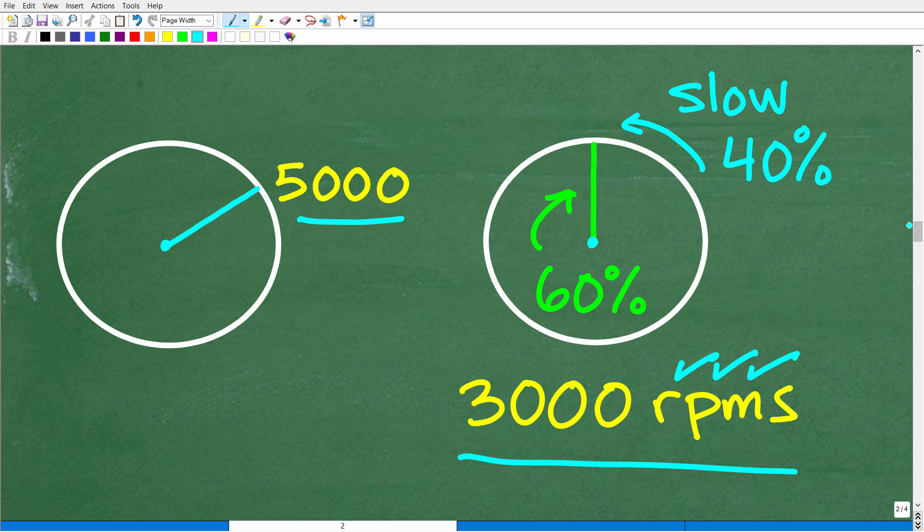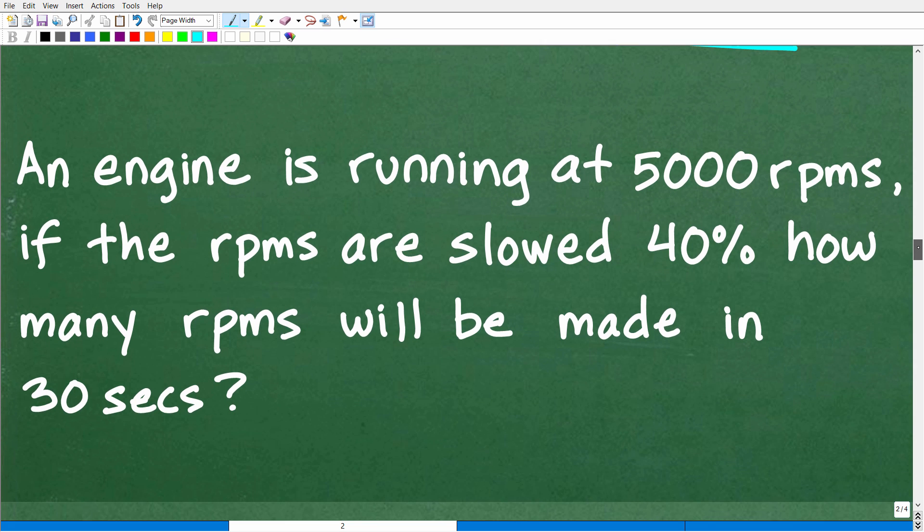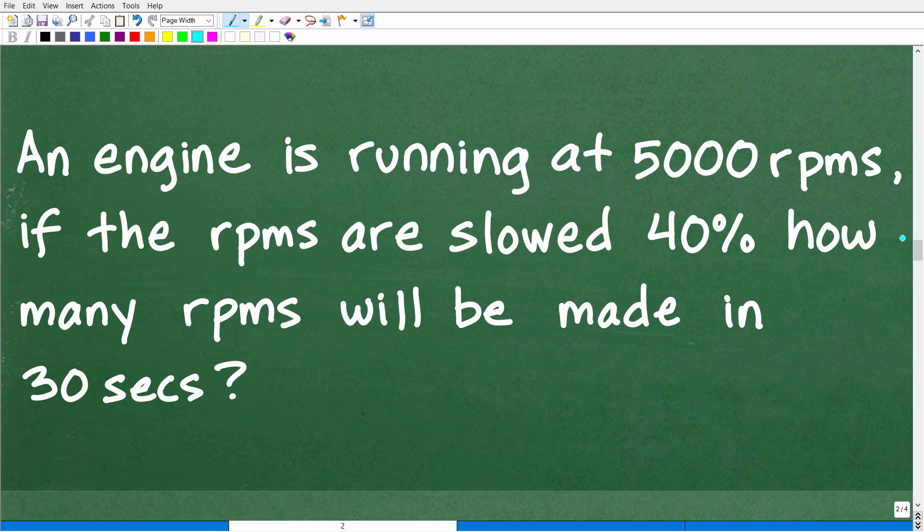Okay. So, that is really, for the most part, the information that we need to know in order to answer the question. So, let's revisit the question. An engine running at 5,000 RPMs. If the RPMs are slowed 40%, i.e., now this engine is running at 3,000 RPMs, how many RPMs or revolutions, namely, will be made in 30 seconds?